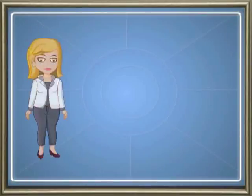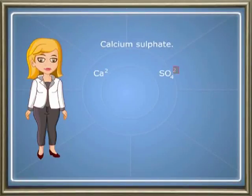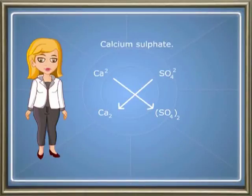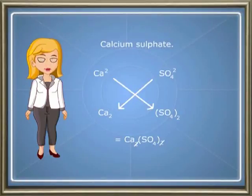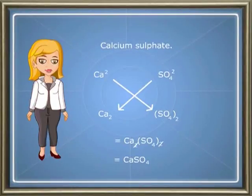In many cases, the least possible ratio of the valencies of the radicals is written. For example, the formula of calcium sulphate: the valency of calcium is 2 and the valency of sulphate is 2. The formula of calcium sulphate initially gives Ca2SO4 twice. When the subscripts are divided by the common denominator — that is, by 2 — Ca2SO4 becomes CaSO4.